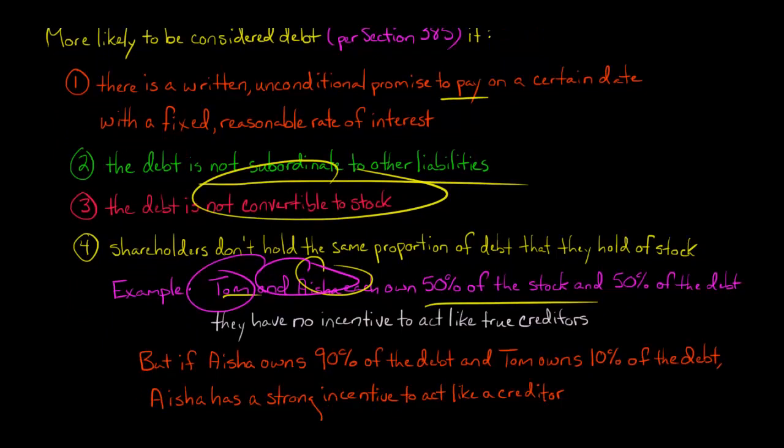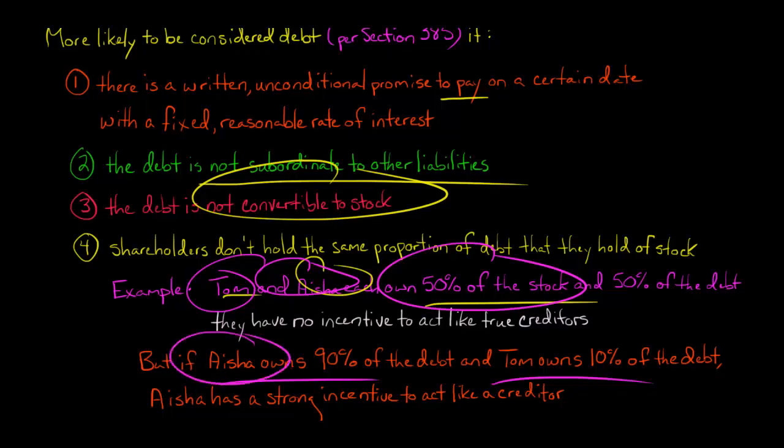But if I just change the facts a little bit: they still each own 50% of the stock, but Aisha owns 90% of the debt and Tom owns 10% of the debt. Now Aisha has a very strong incentive to act like a creditor. If the company were to go bankrupt, she would say: I want to make sure I get this debt repaid first, and then we'll split whatever's left 50-50.